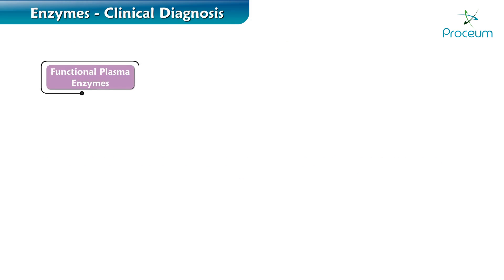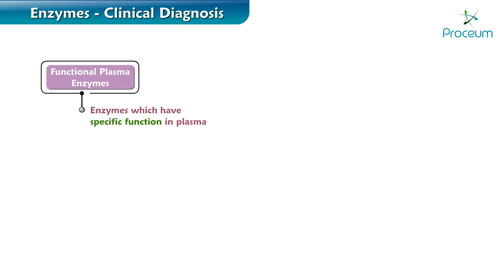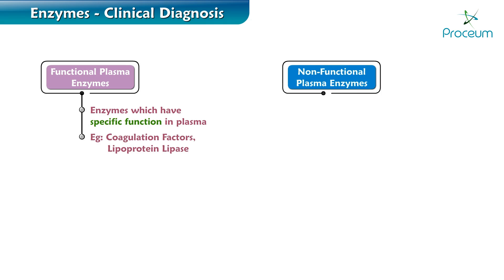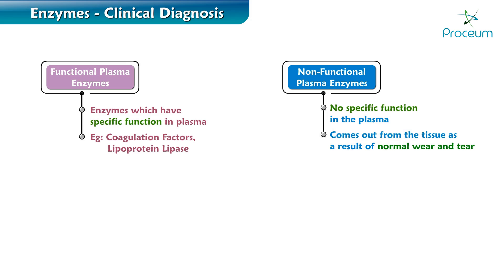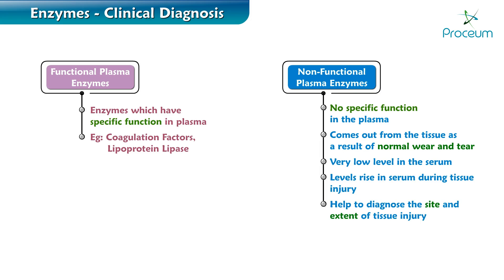Functional plasma enzymes have specific functions in the plasma, for example, coagulation factors and lipoprotein lipase. There are also non-functional plasma enzymes, which come out from the tissue as a result of normal wear and tear. Their level is very low in the serum, but during tissue injury, their level rises. Hence, they help to diagnose the site and extent of tissue injury. Examples include LDH, creatine kinase, and alkaline phosphatase.